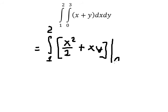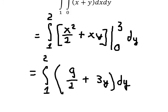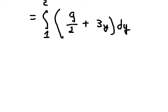We have the bounds from 0 to 3, so I will substitute x equals 3 and x equals 0. After evaluating this, we have 9 over 2 plus 3y dy. The integration...